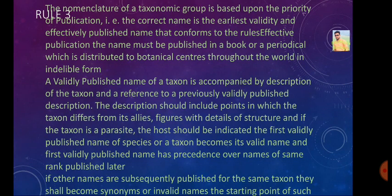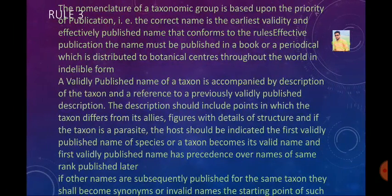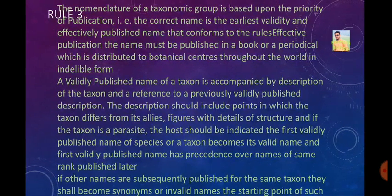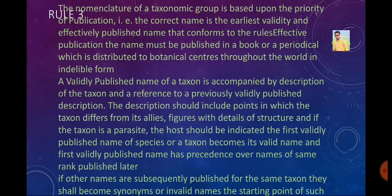If other names are subsequently published for the same taxon, they shall be synonyms or invalid names. The starting point for this system of priority was agreed to be Linnaeus's Species Plantarum, which was published on May 1, 1753.